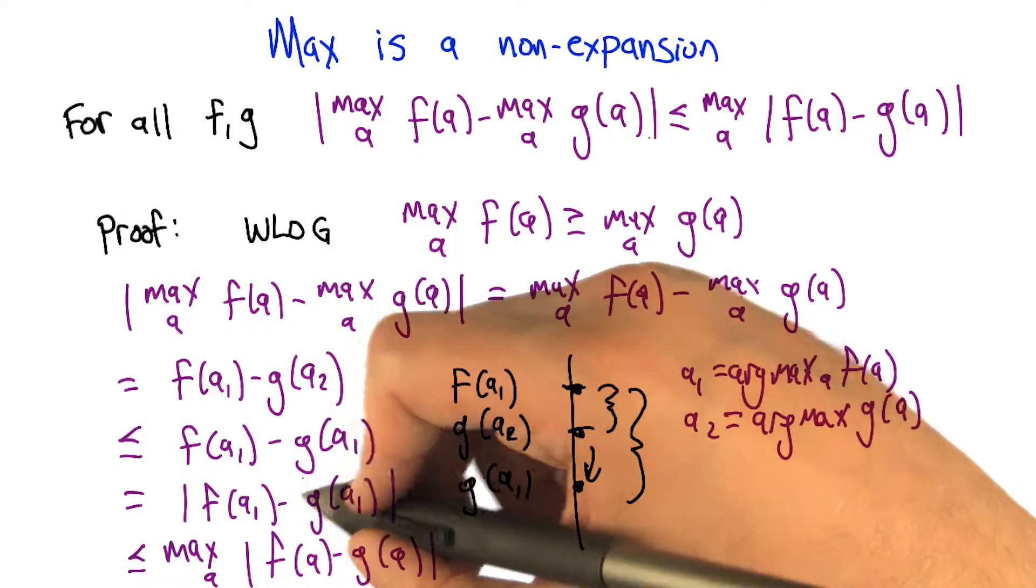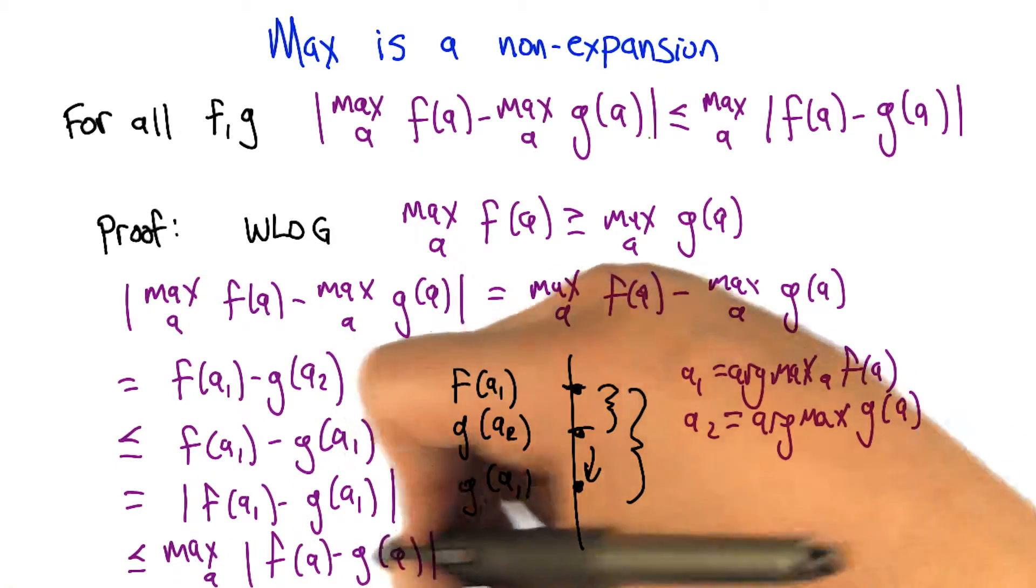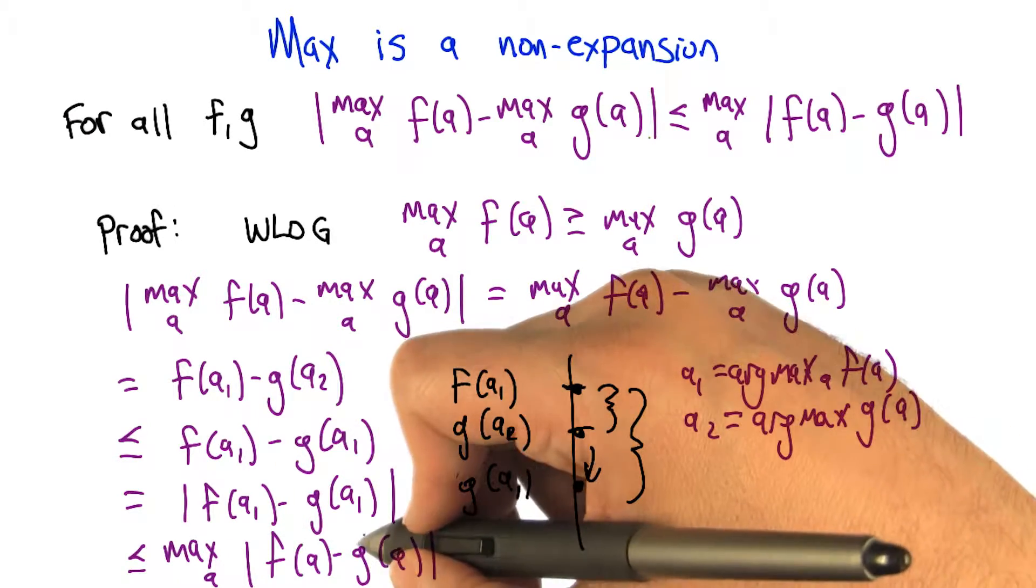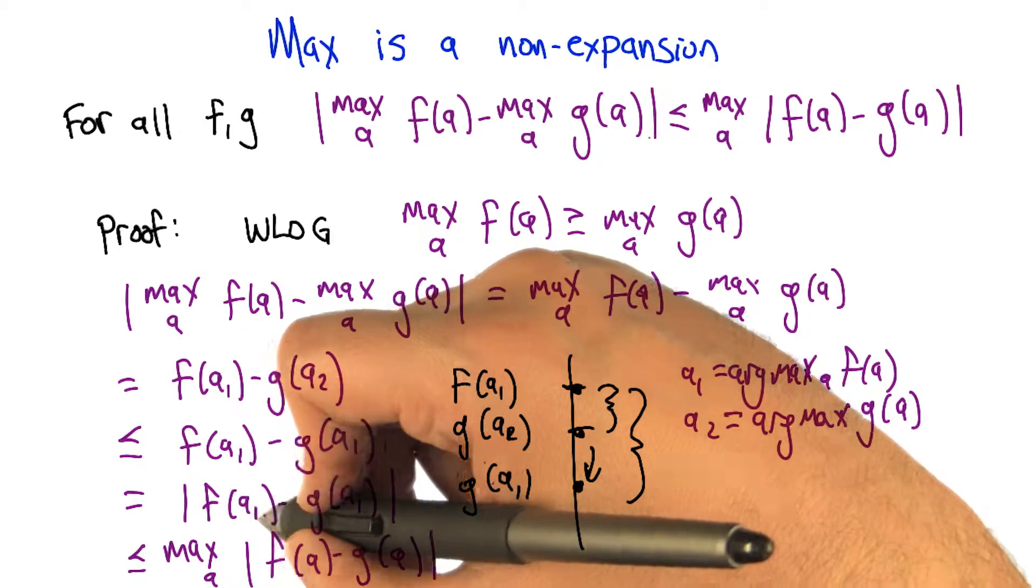So the last little thing to point out is that if we take the max of this same quantity, substituting in different values of A, this can only get larger, or no smaller, because this A that we're maxing over includes A1.